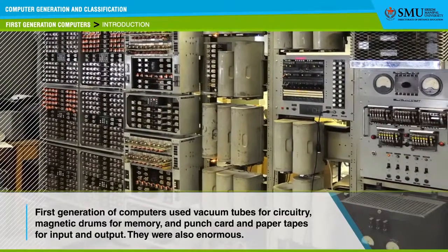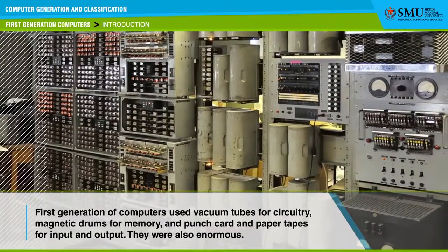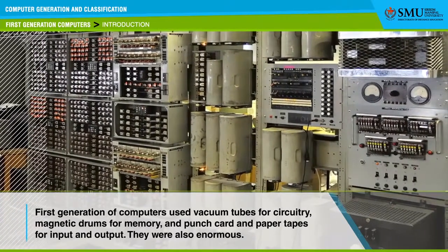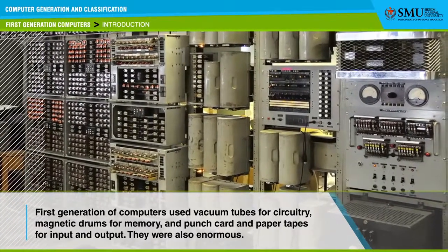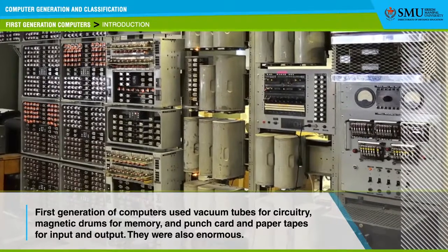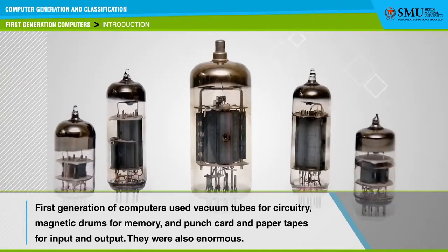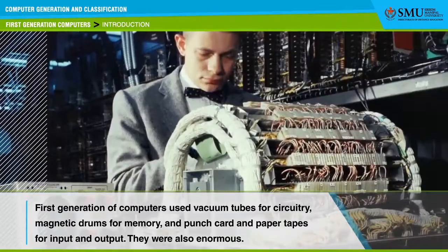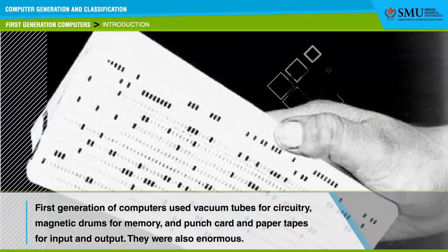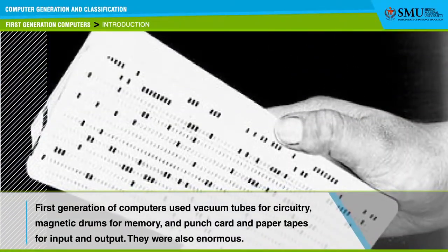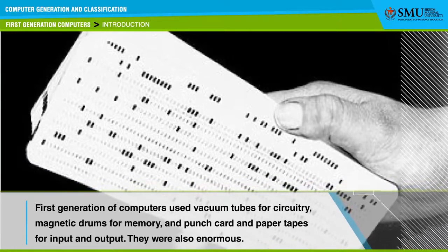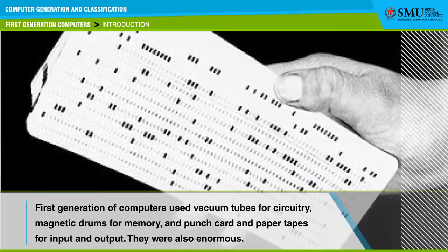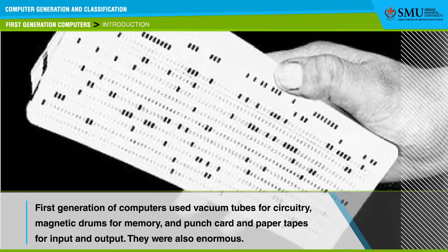Let us begin by learning about the characteristics of the first generation of computers. These computers had some distinct characteristics. They used vacuum tubes for circuitry, magnetic drums for memory, and punch cards and paper tapes for input and output. These computers were typically huge and took up entire rooms.